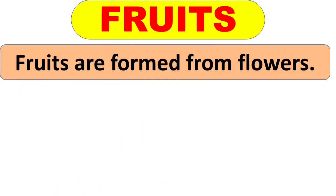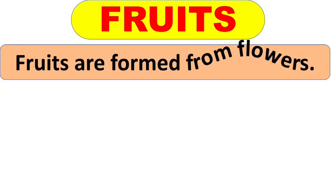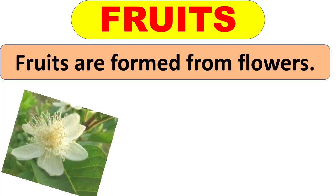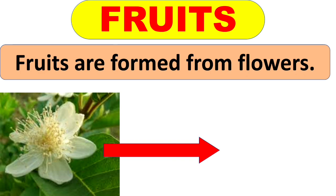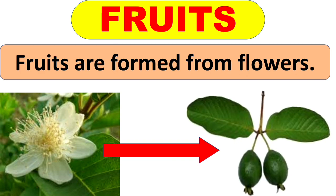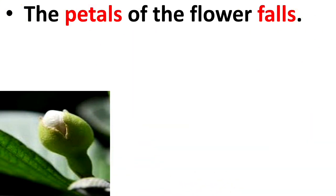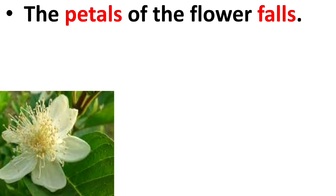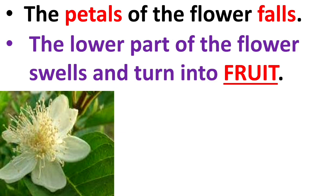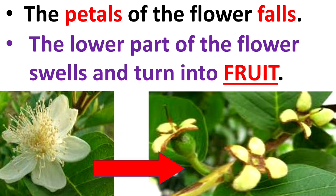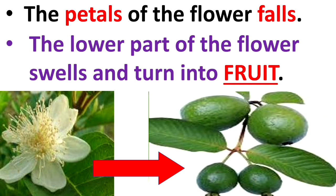Fruits are formed from flowers, and most flowers change into fruit containing seeds inside them. A bud appears on the stem and it turns into a flower. Then the petals of the flower fall, and the lower part of the flower swells and it turns into fruit.